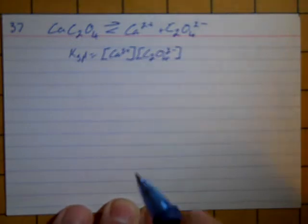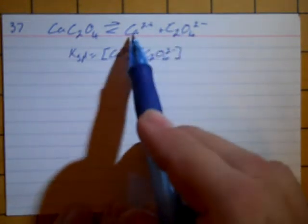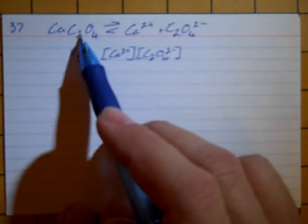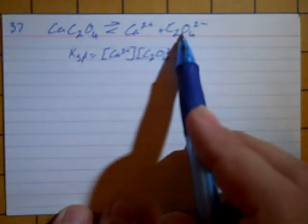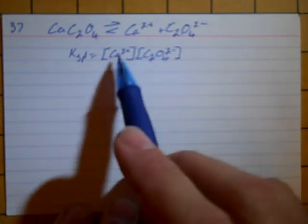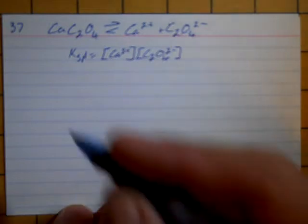So we can also tell from this relationship that it will be identical. The concentration of calcium ions would have been the same as the amount of calcium oxalate that dissolved, and same for the oxalate ion. So that these two numbers are going to be the same. So we just need to figure out what that number is.